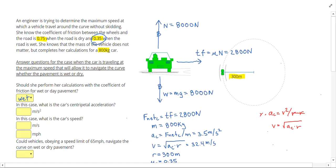So in this case, the centripetal acceleration, filling out my answers on the left, was 3.5 meters per second squared, and my velocity was 32.4 meters per second.